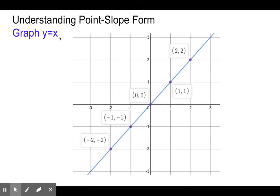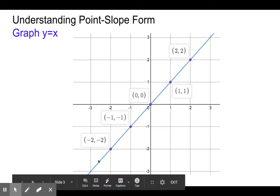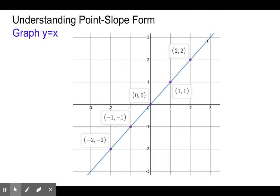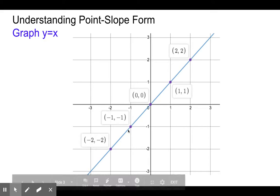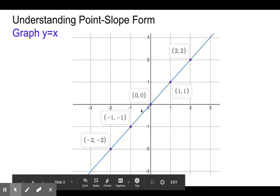Let's take a look at a very simple graph. This is the simplest linear equation: y equals x. We know that when x is 1, y is also 1. When x is 0, y is also 0. We have a very simple set of points here for this graph.